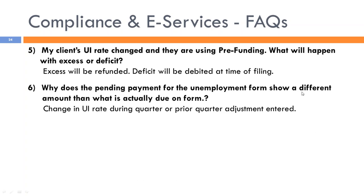Why does the pending payment for an unemployment form show a different amount than what was actually due on the form? There could be a change in unemployment rate during the quarter — the pending payment is calculated based on liability per payroll, while the form recalculates using the current rate times taxable wages for the entire quarter. Also, a prior quarter adjustment entered in the details screen will change the balance due on the form.